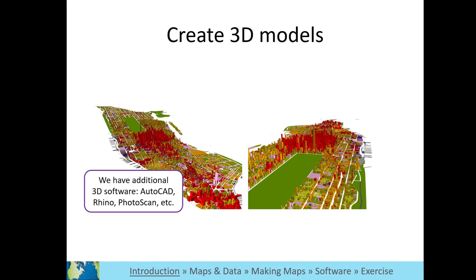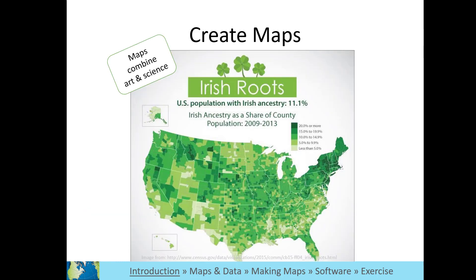If you're an MIT affiliate, you can access these in the GIS and data lab. Creating maps is what most people think of as the main application of a GIS. They can be used to share information where design is important and even play a persuasive role. In this map, see how the creator chose green for Irish ancestry, with a darker shade of green for a higher percentage.